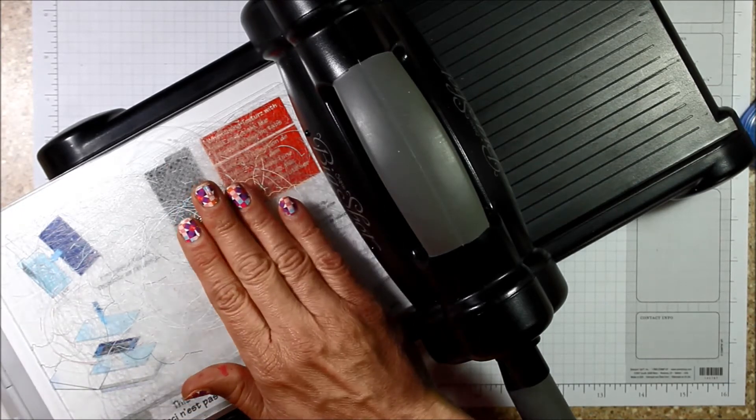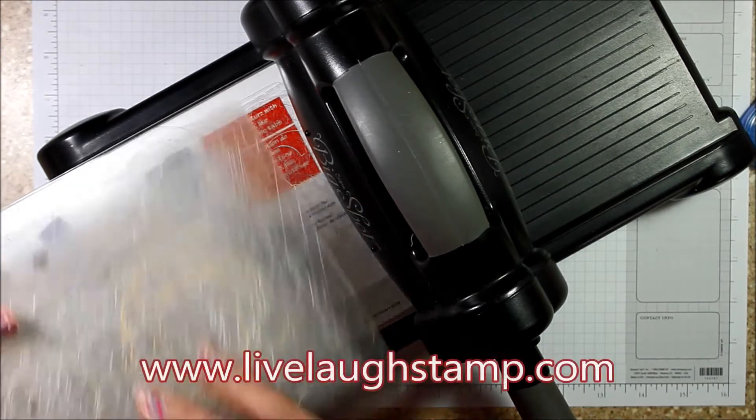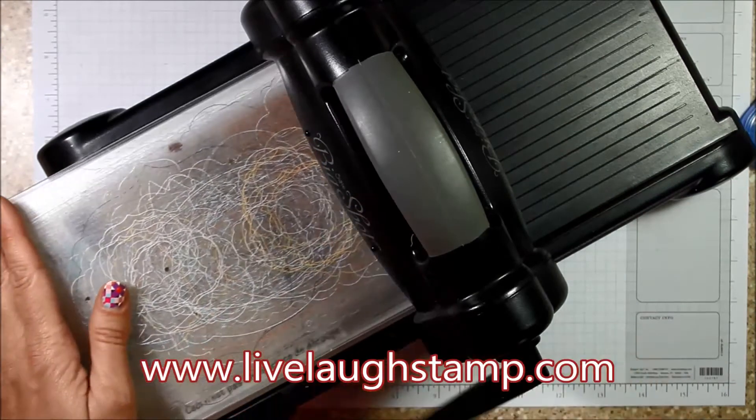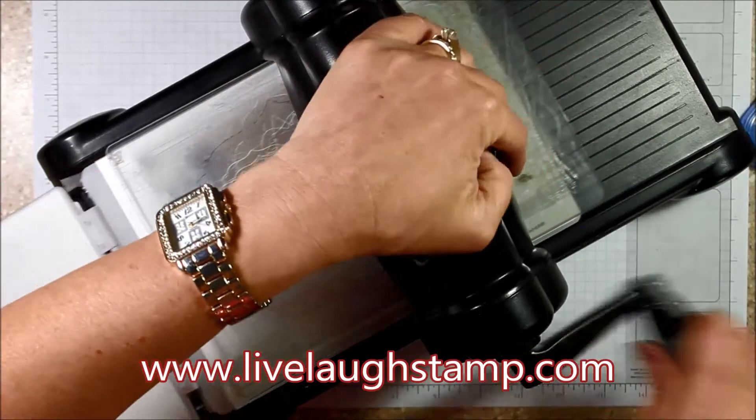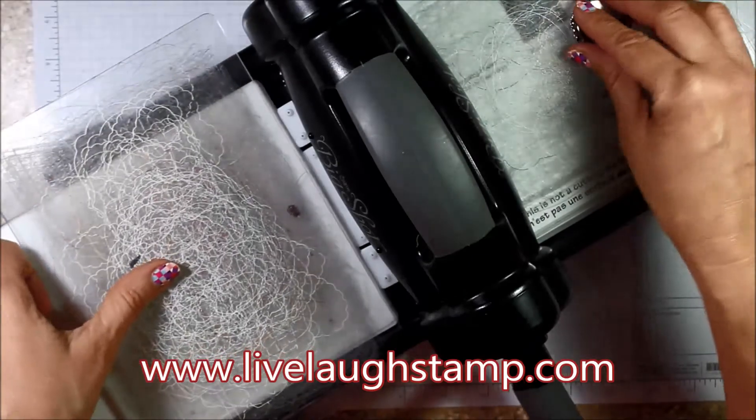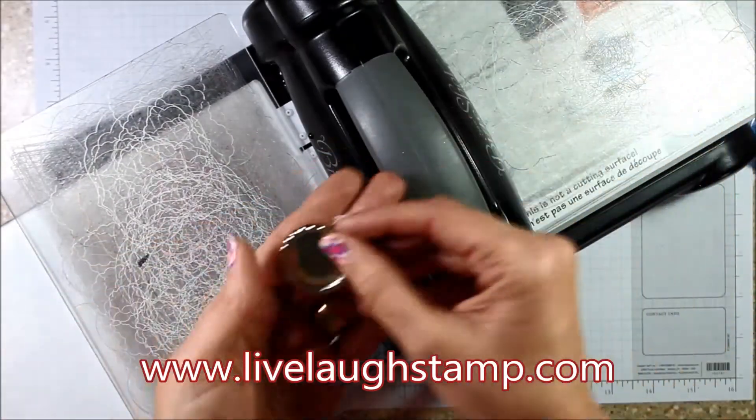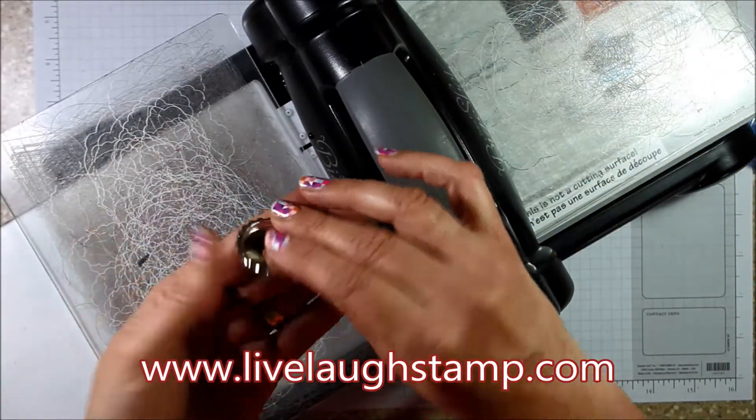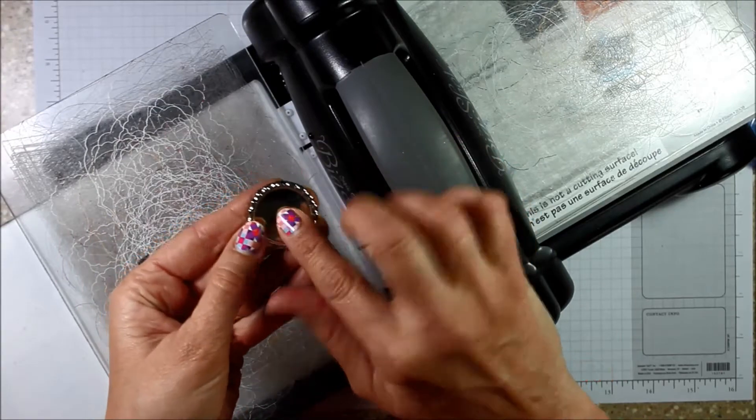I do think face down you might maybe get a little bit flatter even image. But really both ways are going to work. And so that's now in there and I'm just running it on through. Now you can see how easy that was to run through. It was not a struggle at all. And now that soda pop top is flat and really nice to be able to put onto a card.